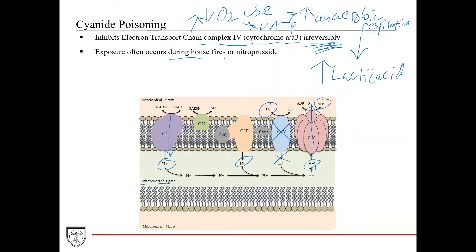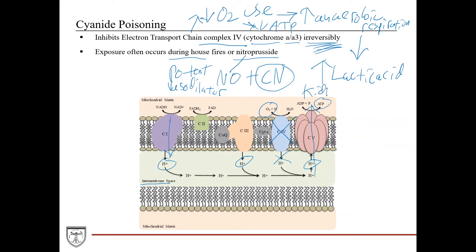Exposure to cyanide often occurs during house fires or with nitroprusside. Nitroprusside is a pharmacological agent used to treat hypertensive emergencies because it's broken down into nitric oxide, a potent vasodilator. However, it's also broken down into cyanide. This is particularly important in patients with kidney disease because they can't process and clear metabolites as efficiently, but it can also occur in patients without kidney disease. A board question stem could have someone in hypertensive crisis given nitroprusside who then presents with symptoms of cyanide poisoning.